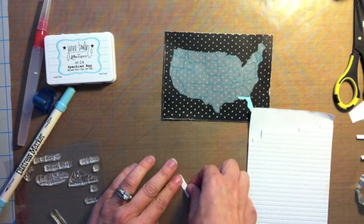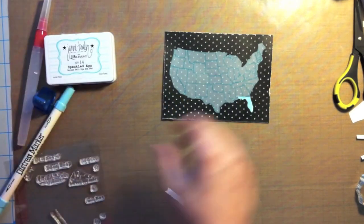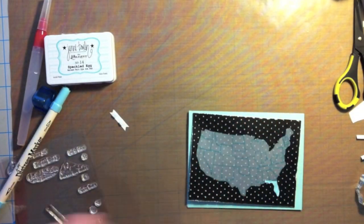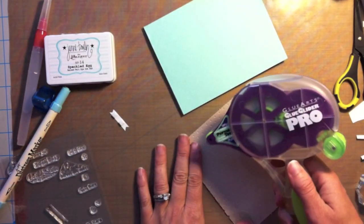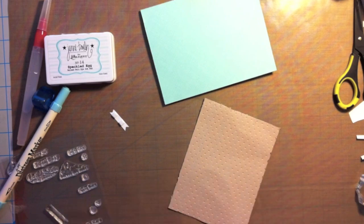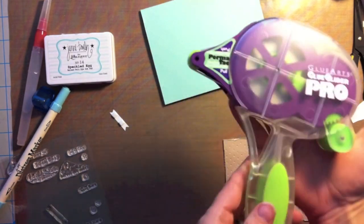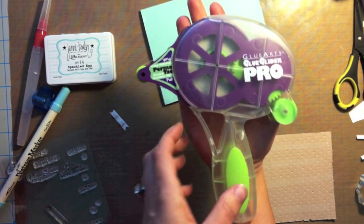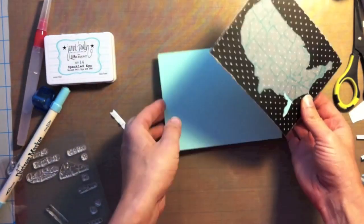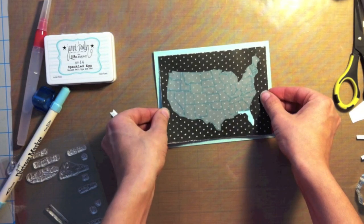I'm going to use some dimension and kind of pop that little sentiment strip up with some dimension, but before I do I want to go ahead and adhere that panel down to my card base. I'm going to be using the Glue Glider Pro. It's a fabulous adhesive. It comes with a lot of adhesive in it and it's real easy. The cartridges are real easy, you just pop it out, pop it in to change out. So I'm a big fan, again it'll be linked up on my blog if you're interested.